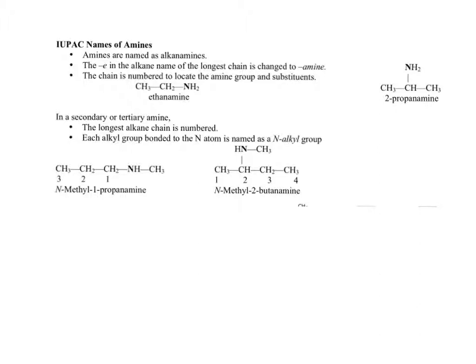For secondary or tertiary amines, name the longest alkane chain with numbering, and each alkyl group bonded to the nitrogen is named as an N-alkyl group. In this first example, the longest chain is propane, making it propanamine, with a methyl group coming off the nitrogen named as N-methyl, and the nitrogen comes off carbon one — so the complete name is N-methyl-1-propanamine.